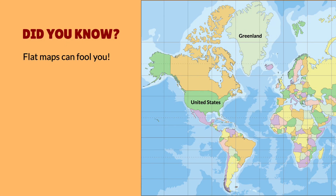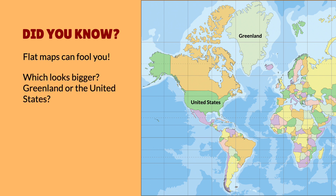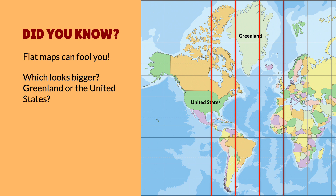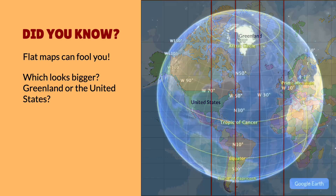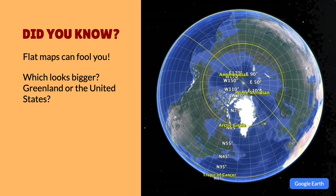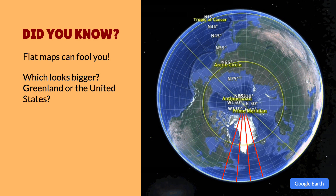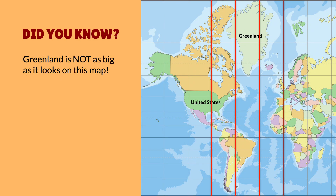Here's another interesting thing about maps. Take a look at this flat map of the world — which looks bigger to you, Greenland or the United States? Believe it or not, the United States is much bigger than Greenland. That's because maps with straight longitude lines make locations near the north or south poles look a lot bigger. Near the north pole, all the longitude lines are coming together, so distances between them are smaller. On maps with straight longitude lines, locations like Greenland get stretched out. We can do a little animation to show how Greenland really compares to the United States — and that's a big difference.